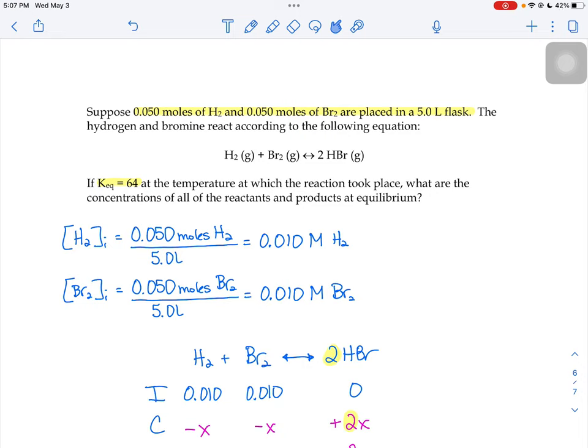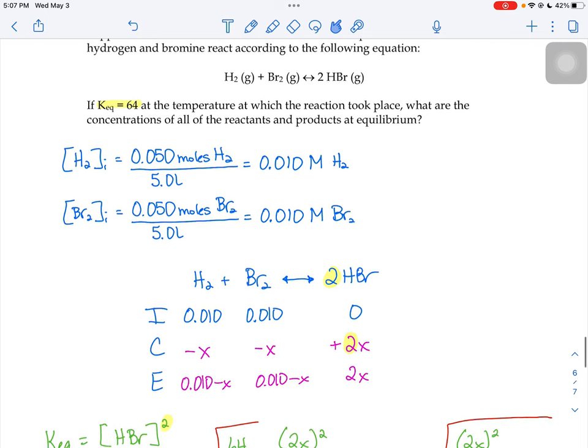So we know the initial molarities of both the hydrogen and the bromine. You can assume that there's no hydrogen bromide, or hydrobromic acid, in the beginning because the reaction hasn't started yet. We plug those numbers into the ICE table.